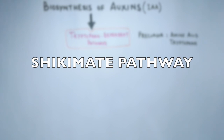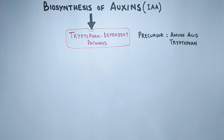This is the reason we must take tryptophan in our diet, as we cannot synthesize it in our body due to the absence of tryptophan synthase enzyme. But plants have this enzyme and can synthesize tryptophan using it.